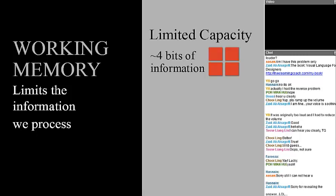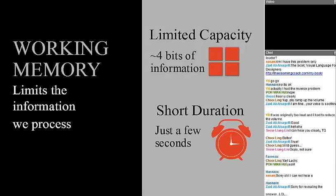Working memory definitely has limitations for learning. It limits the information we process and has very limited capacity — possibly four to five bits of information at one time. They used to say seven plus or minus two, but latest research shows it's quite a bit less. Things in working memory last just a few seconds — that's why when someone tells you their phone number, you repeat it over and over, because if you don't write it down, it just vanishes.